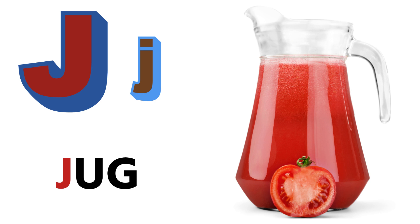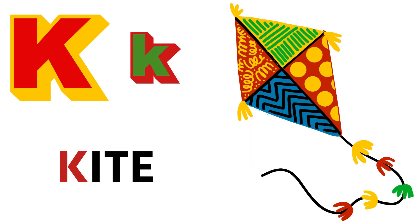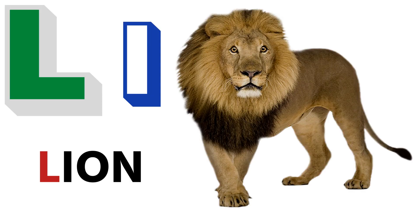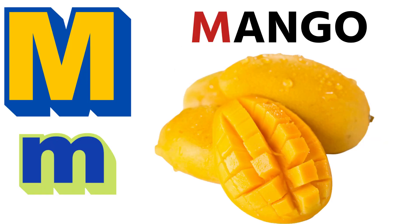J for Jug, J for Jug. K for Kite, K for Kite. L for Lion, L for Lion. M for Mango.